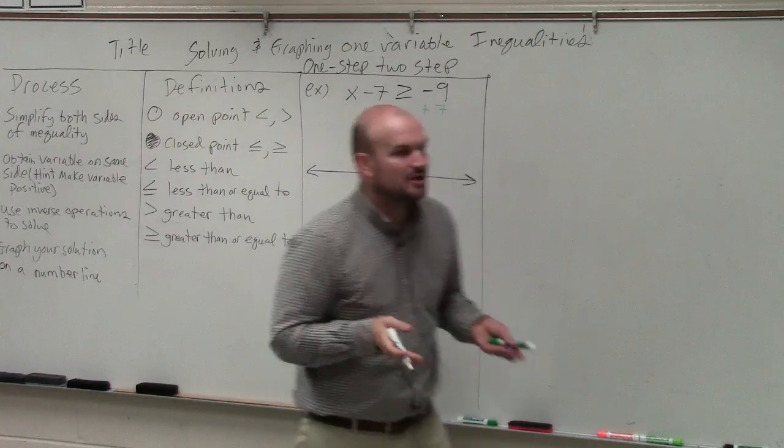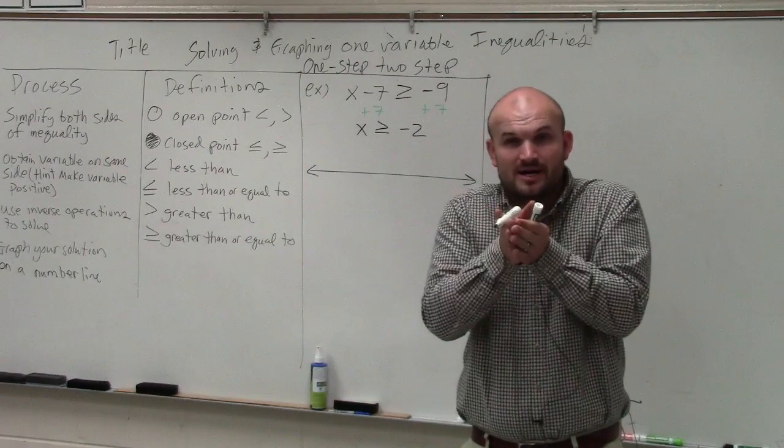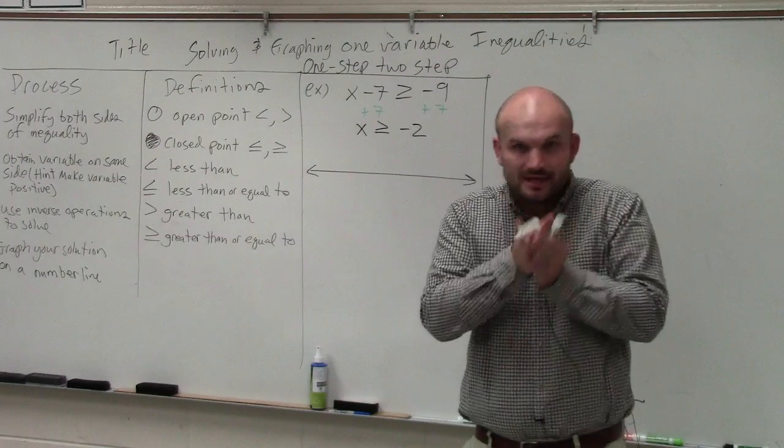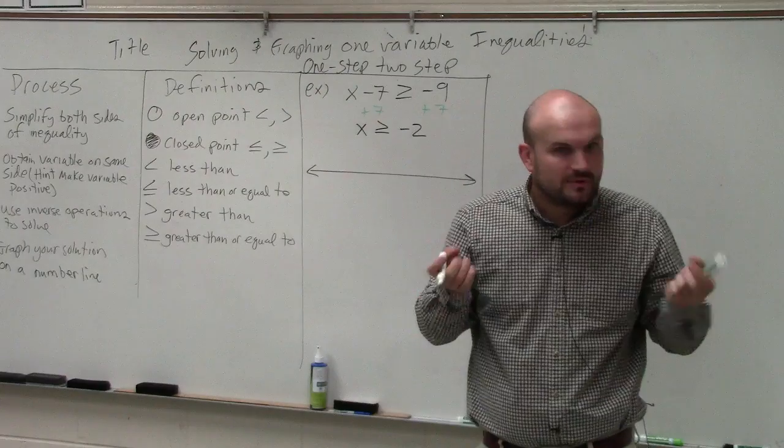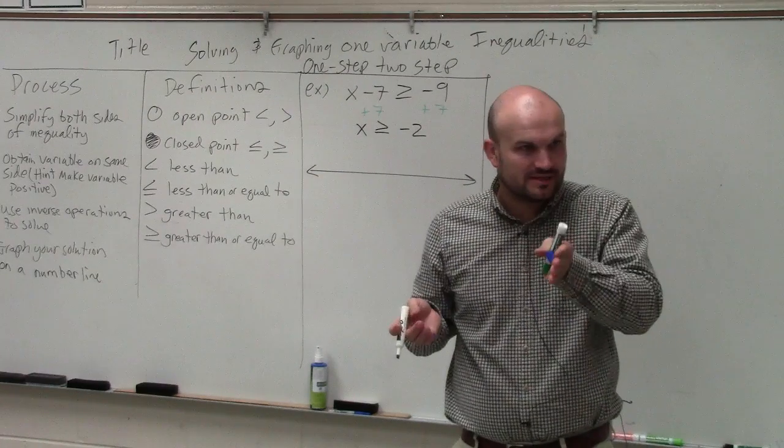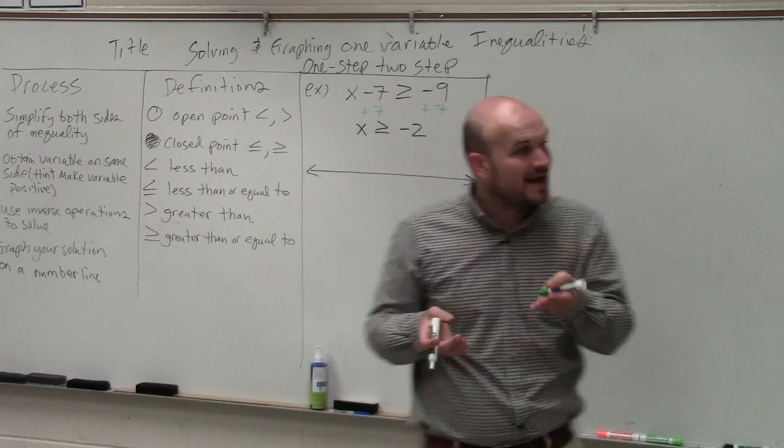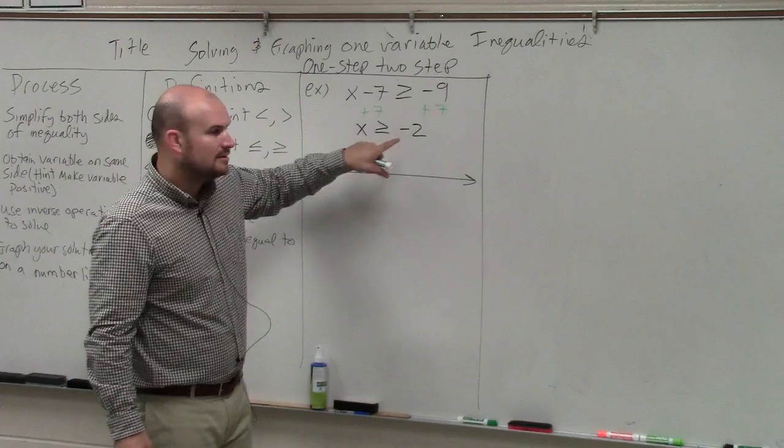Now, in the typical number line that you guys are familiar with, we always started with 0 in the middle, right? And then numbers to the right were the positive integers, and numbers to the left were the negative. When graphing inequalities, you could have a solution that's like 115. So you don't want to have 0 in the center. What I prefer to do is have my solution kind of in the center.